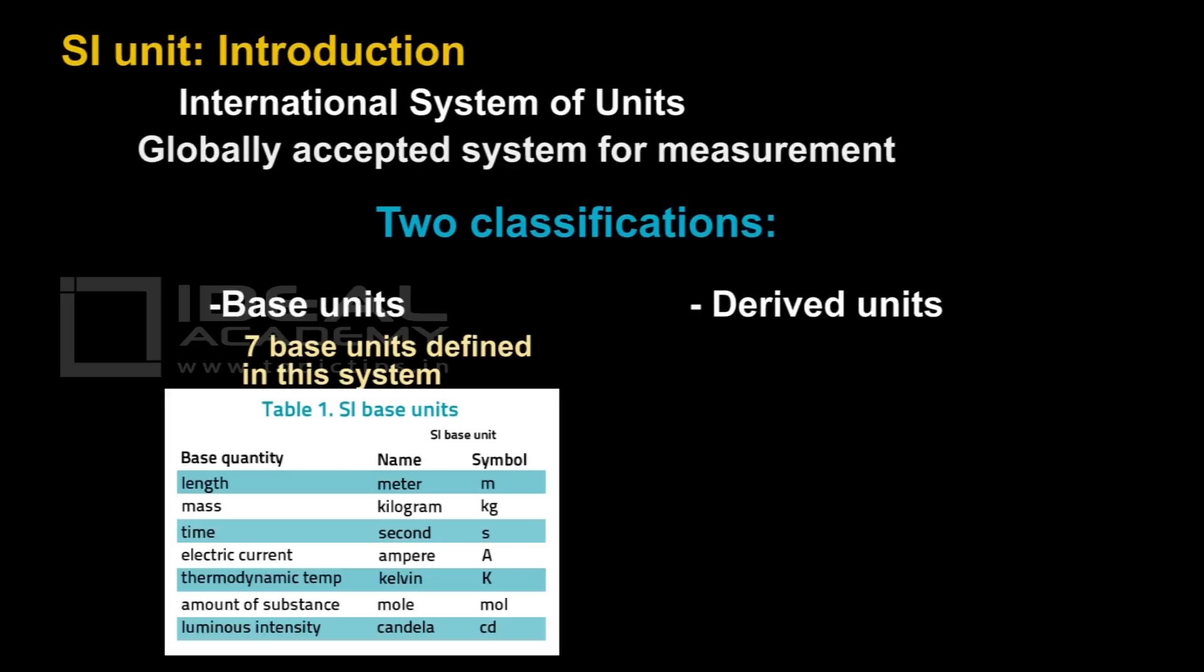The seven fundamental units are: Length - meter (m), mass - kilogram (kg), time - second (s), electric current - ampere (a), thermodynamic temperature - kelvin (k), amount of substance - mol (mol), luminous intensity - candela (cd). These are the seven base quantities and their units.